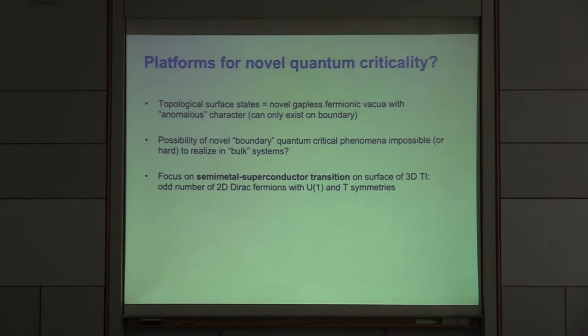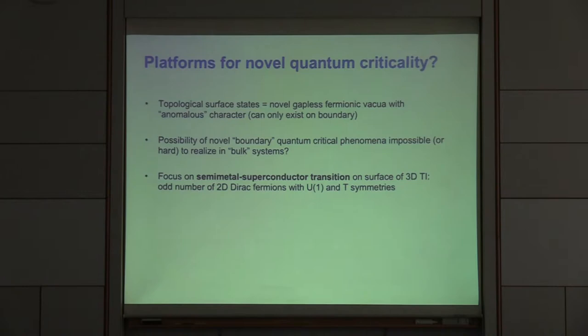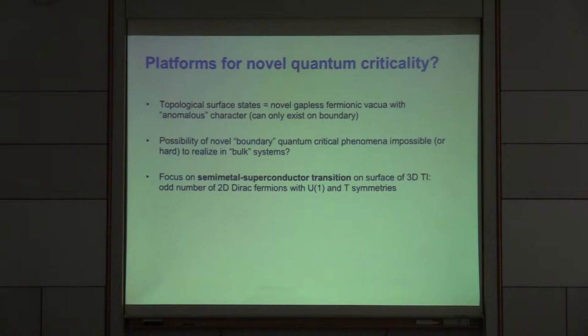So we know we have these anomalous states, and this affects the question when we include interactions. If we add interactions to the system, is it possible that these anomalous surface states can give rise to new types of quantum phase transitions that, in a sense, are possible because of this anomalous character? In a sense, we have boundary quantum critical phenomena that would be impossible or at least hard to realize in bulk systems.